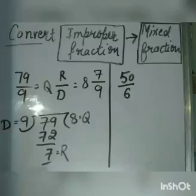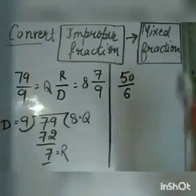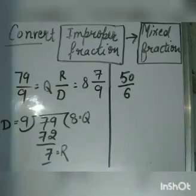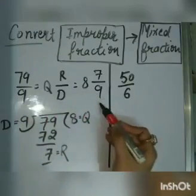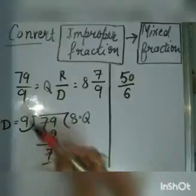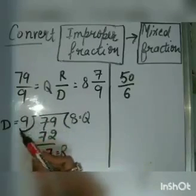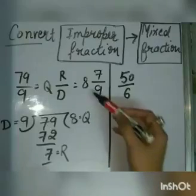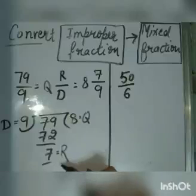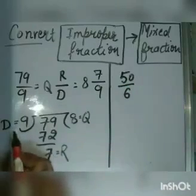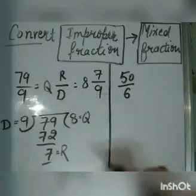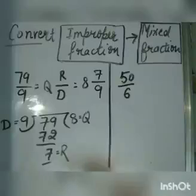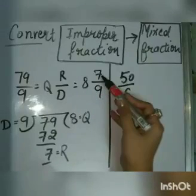Let us now understand how to convert an improper fraction into a mixed fraction. For example, 79 upon 9. This is an improper fraction and we have to convert it into a mixed fraction. First, divide the numerator by the denominator: 79 divided by 9. 9 times 8 is 72, so the quotient is 8 and the remainder is 7. The quotient becomes the whole number, the remainder becomes the numerator, and the divisor becomes the denominator of the mixed fraction. So we get 8 and 7 upon 9. You can verify: 8 times 9 is 72, plus 7 gives 79 upon 9.